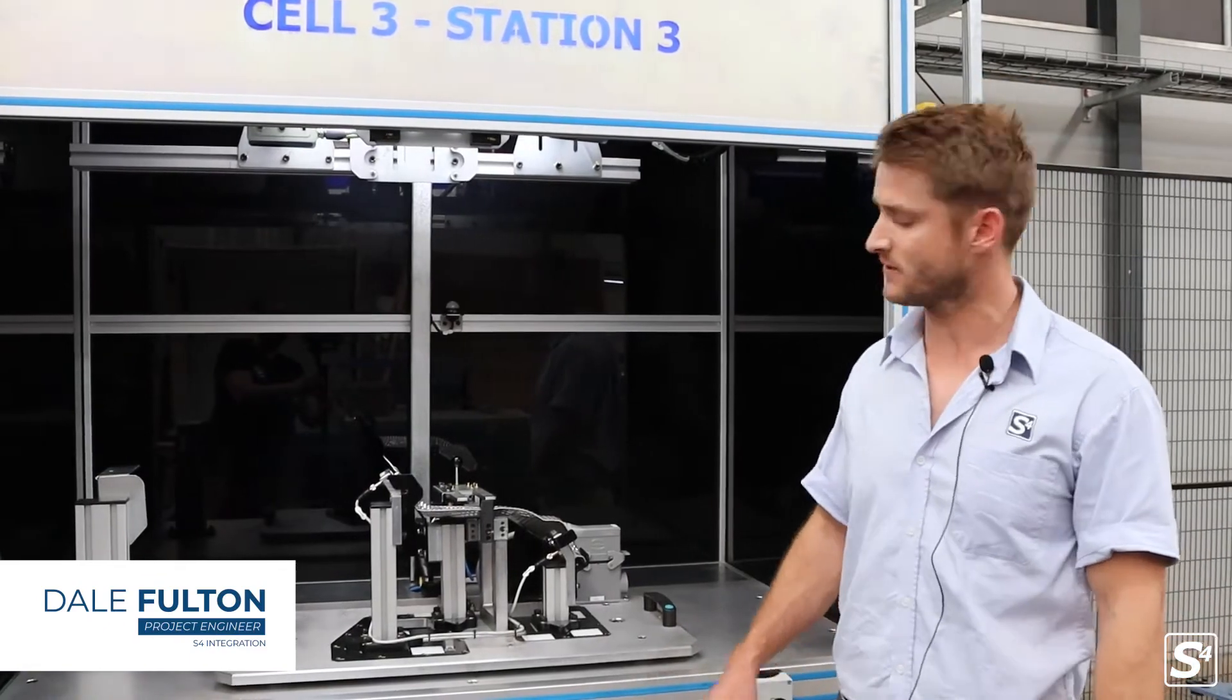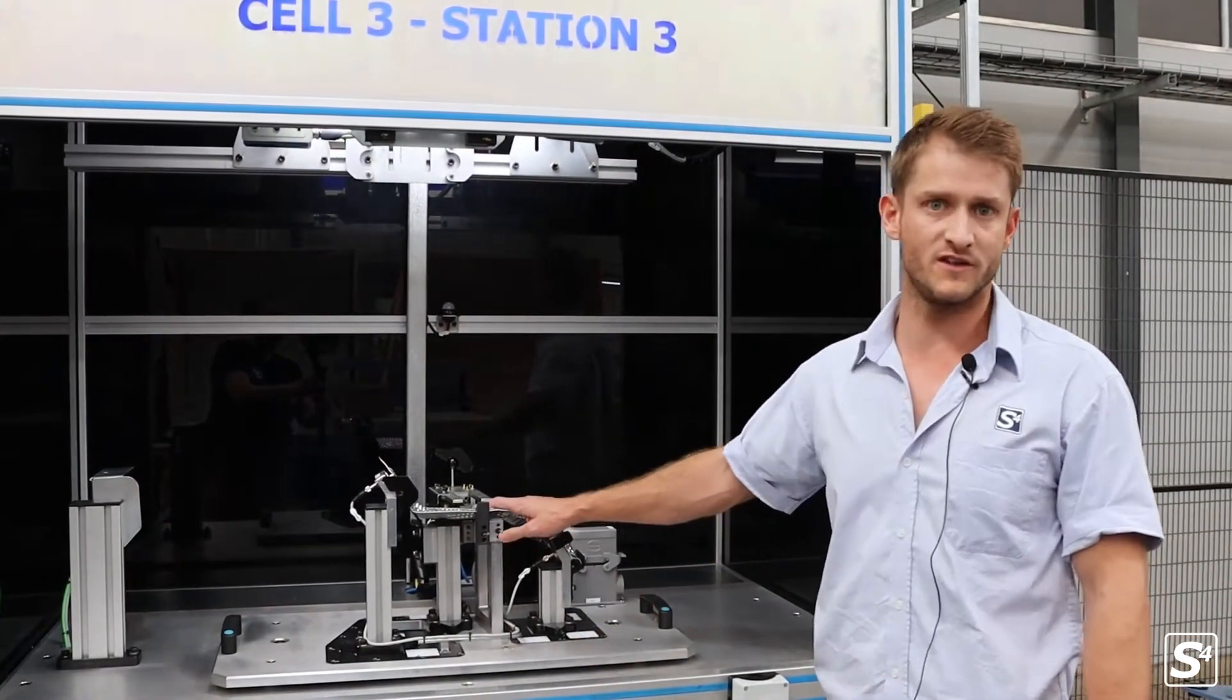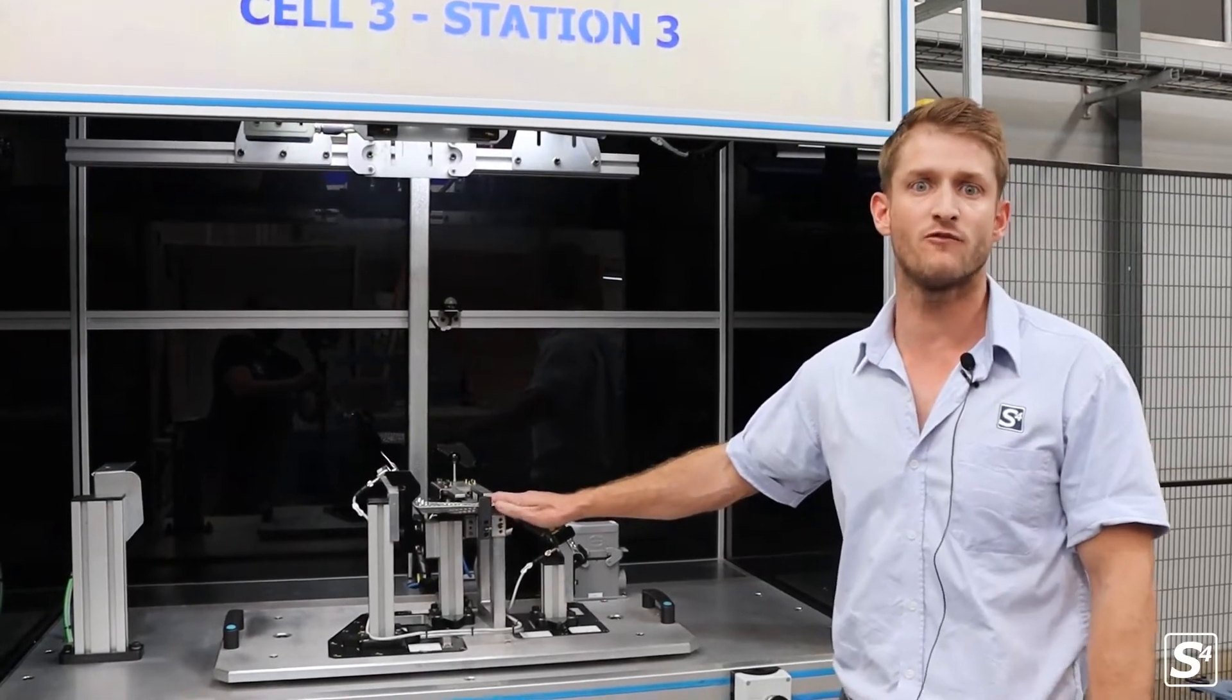So this machine is an inspection station. We inspect multiple heat shields for quality control after they've been pressed to verify that they are within spec.